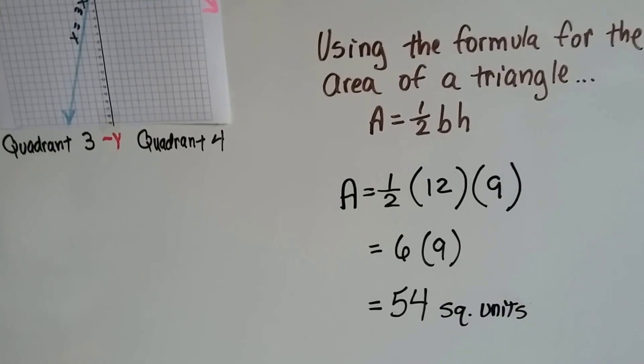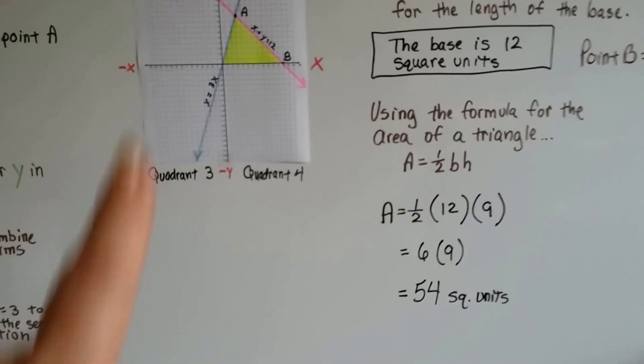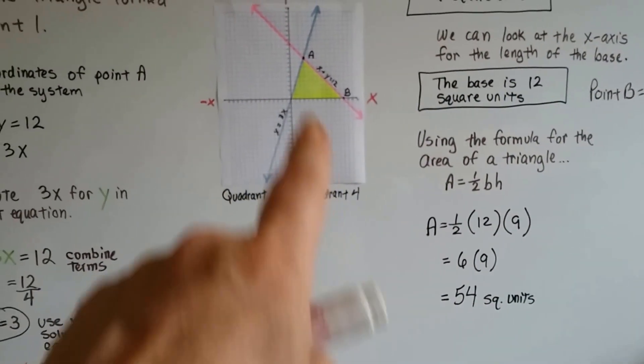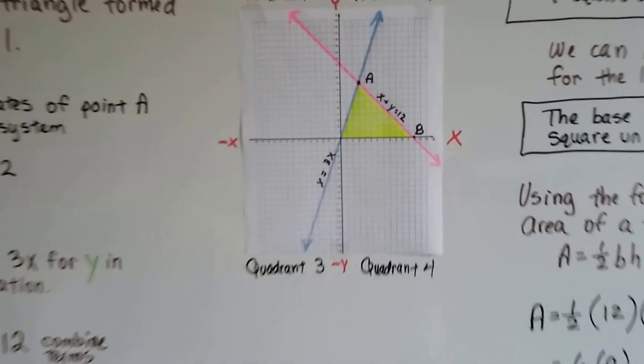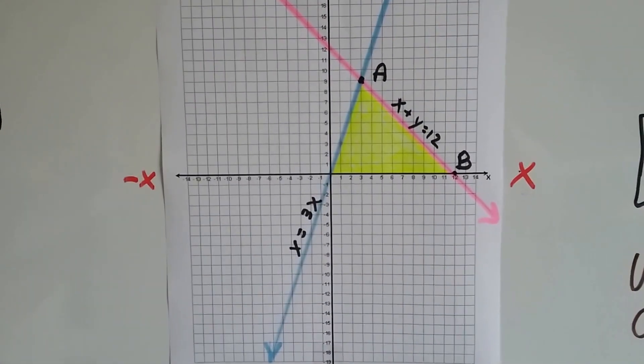Either way, it's going to be the same, right? So, we know that the area of this yellow triangle is 54 square units. See that?